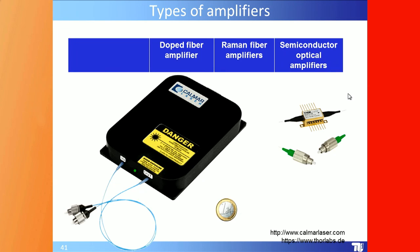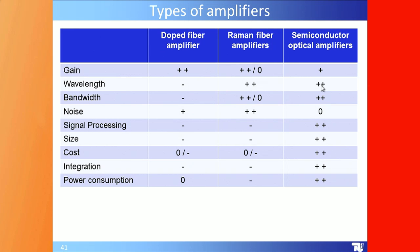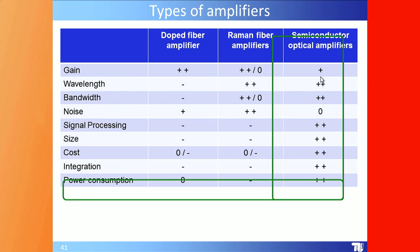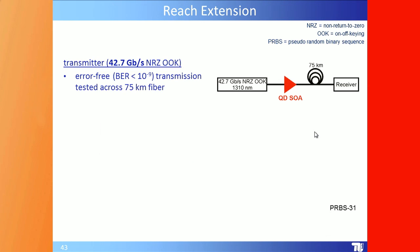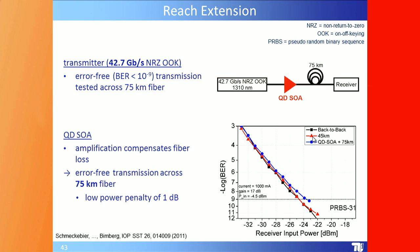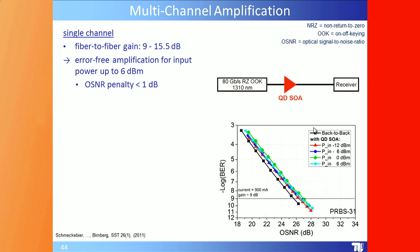At 1.3 µm, the main options are Raman or semiconductor optical amplifiers (SOAs). Quantum dot SOAs have huge advantages: chip gain up to 35 dB, very low gain ripple of 0.3 dB, amplification of multiple data signals at a variety of wavelengths with negligible crosstalk. We demonstrate error-free transmission across 75 km with a power penalty of only 1 dB.